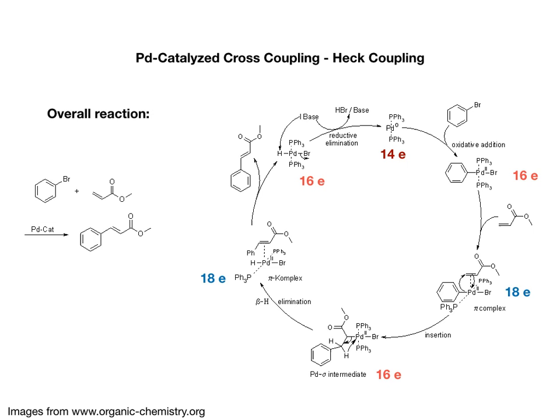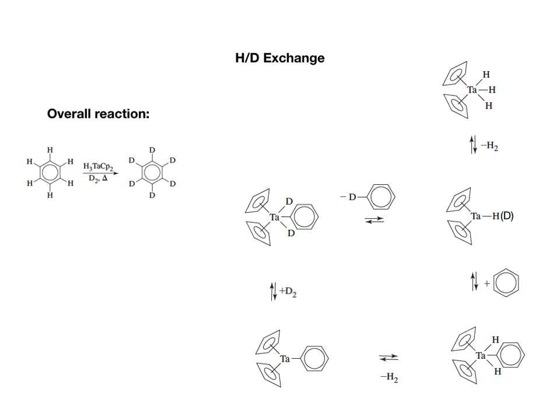In the next example, we look at hydrogen-deuterium exchange. The overall reaction shows regular benzene reacting with D2 to produce deuterated benzene. The reaction involves a tantalum complex with two Cp ligands and three hydrogen ligands. It undergoes reductive elimination to release a hydrogen molecule, producing a monohydride complex. Then, adding a benzene ring is an oxidative addition process — the hydrogen-carbon bond in benzene is broken and both the phenyl ring and the hydrogen are added to the tantalum center.